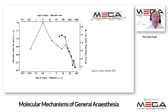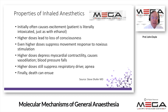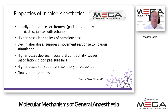The properties of an inhaled anesthetic are important. Initially, it often causes excitement — the patient is intoxicated just as with ethanol. When people were given ether in public demonstrations, they would behave excitedly until they got into deeper anesthesia, in which case they would lie down and be unconscious. Higher doses can suppress movement and response to noxious stimulation. Even higher doses cause decreased myocardial contractility, vasodilation, drops in blood pressure, and even apnea. We mitigate many of these things, such as by ventilating the patient and giving volume in the case of vasodilation.